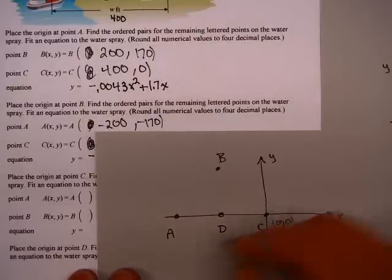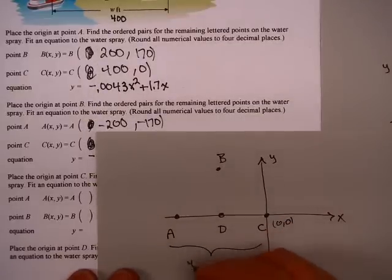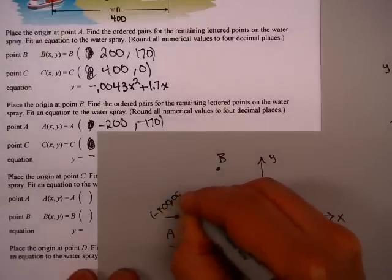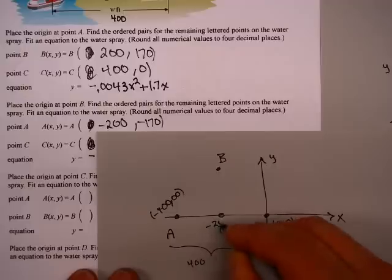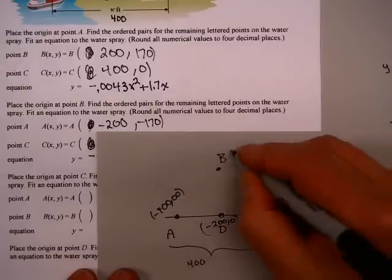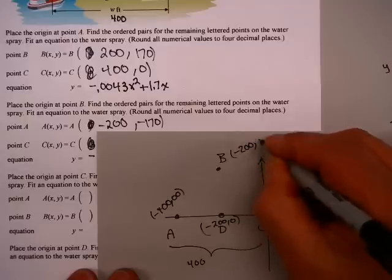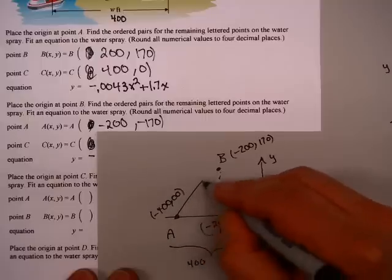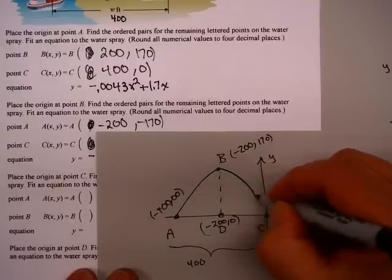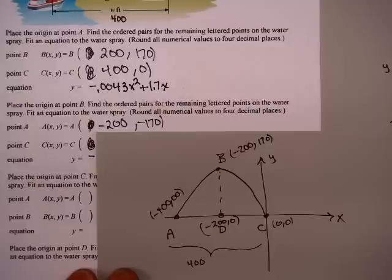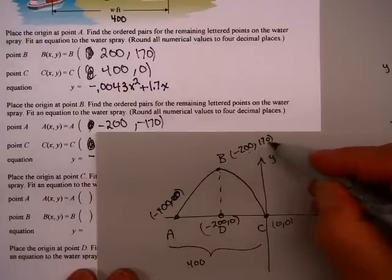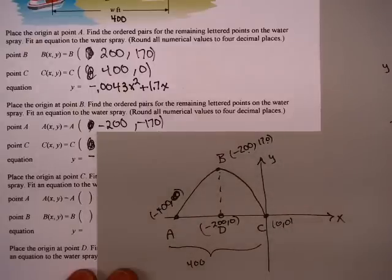So, C is the origin. This distance is 400. So, this is minus 400, zero. This is halfway, so this is minus 200, zero for D. So, b is minus 200, 170. Again, remember, the height of the water spray is 170. So, there I have it. Now, those are my three points. Minus 400, zero. Minus 200, positive 170, and zero, zero.